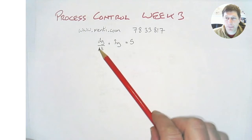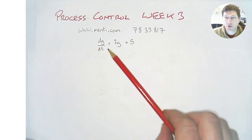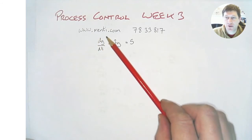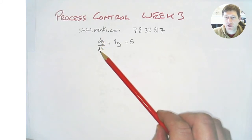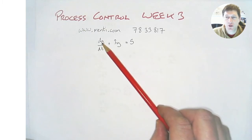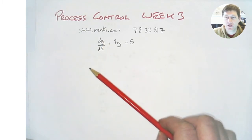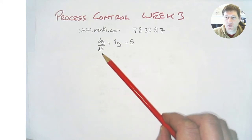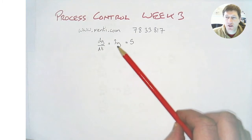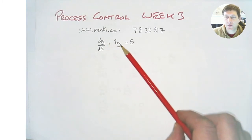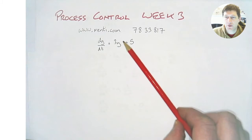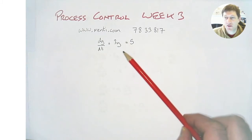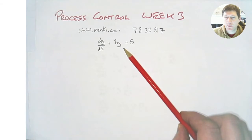The first example: we identify that the highest order of the differential term is 1, so it's a first order differential equation. The differential term is the total differential, not a partial differential, so it's called an ordinary differential equation. Is it linear or non-linear? We need to consider the y term. All of the y terms are on their own and not raised to any power — no y squared, no y times something else. So this is a first order linear ordinary differential equation.